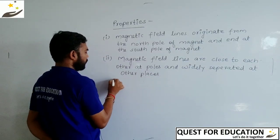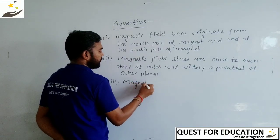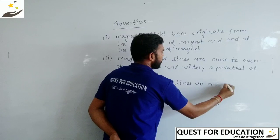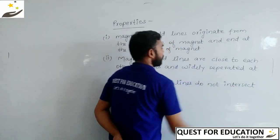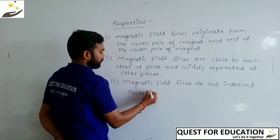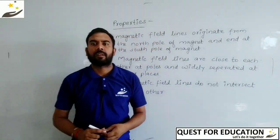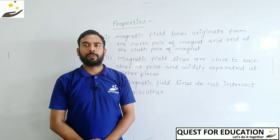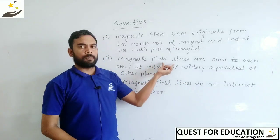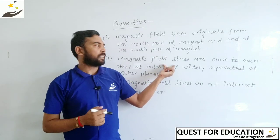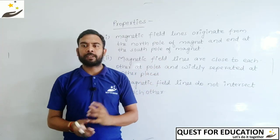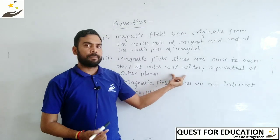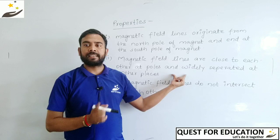The third property, which is the most important property: magnetic field lines do not intersect each other. So these are our three important properties. First, magnetic field lines start at the north pole and end at the south pole. Second, at the poles magnetic field lines are very close to each other, and at other places they are widely separated.